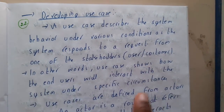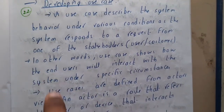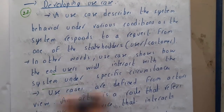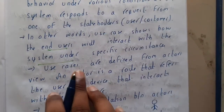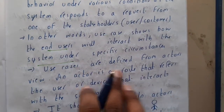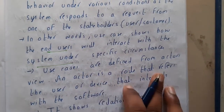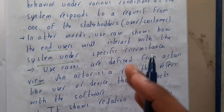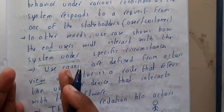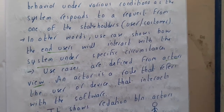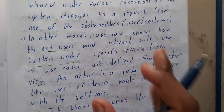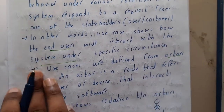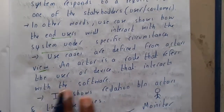In other words, use case diagrams show how end users will interact with the system. Use cases are defined from the actor's view — basically from the user's view — not from the server or back-end view.